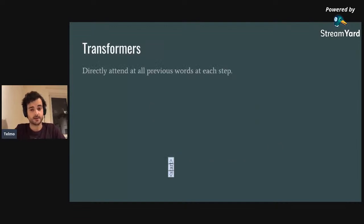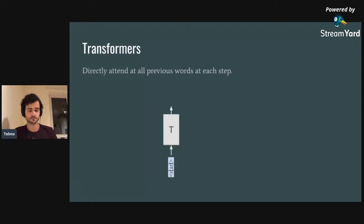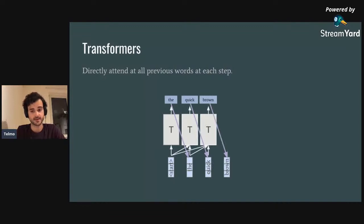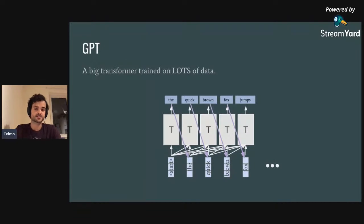Besides RNNs, there are models that allow unlimited context, one of which is the transformer. The transformer directly attends to all previous words using an attention mechanism. Initially you have a start symbol and train it to predict the first word; then you have two words and look at both to predict the next; and you keep doing this, always attending to all words seen so far until the end of the sentence. This is essentially how GPT works.